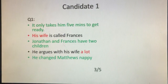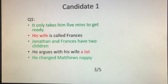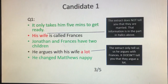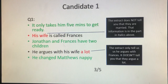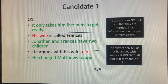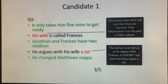Candidate 1 wrote five bullet points, but only three of them got marks. 'His wife is called Francis' — the extract does not tell you they are married; that information is in the italics above, so that would be a wrong answer. 'He argues with his wife a lot' also does not get a mark — if the candidate had said 'he argues with his wife' that would get a mark, but there is no evidence that they argue a lot based on the extract given. So, three marks out of five.